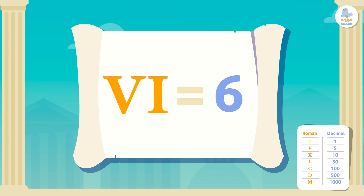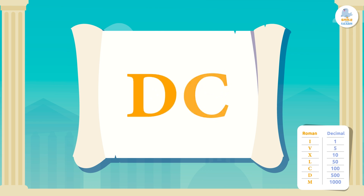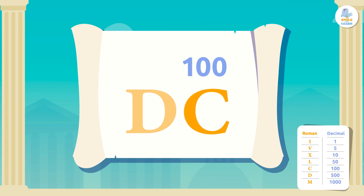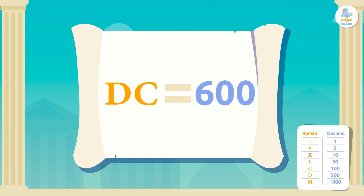So the letters V and I together equal 6. Let's look at another example: the letter D equals 500 and to its right is the letter C which equals 100. It is written from greatest to least, so DC equals 600.